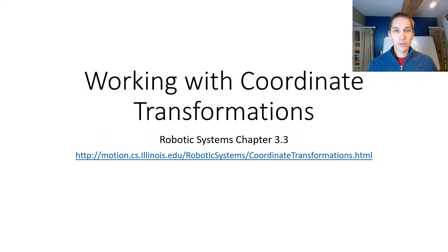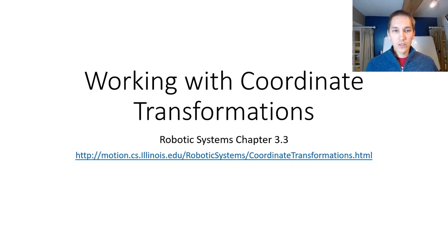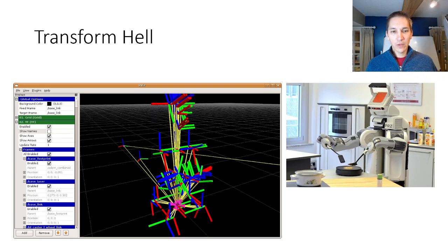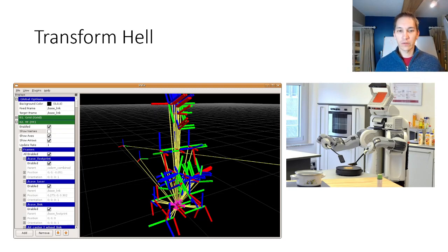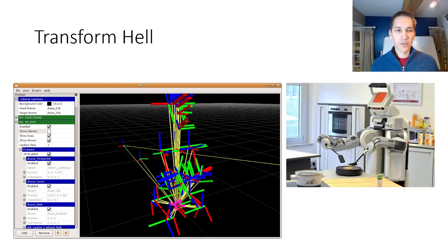The material we cover in this lecture will also be covered in Robotics Systems Chapter 3.3. What we typically have in a robot is a lot of different coordinate systems all over the place. This is just a picture of the Willow Garage PR2 robot with dozens and dozens of different coordinate systems that could be referred to — you can call this transform hell.